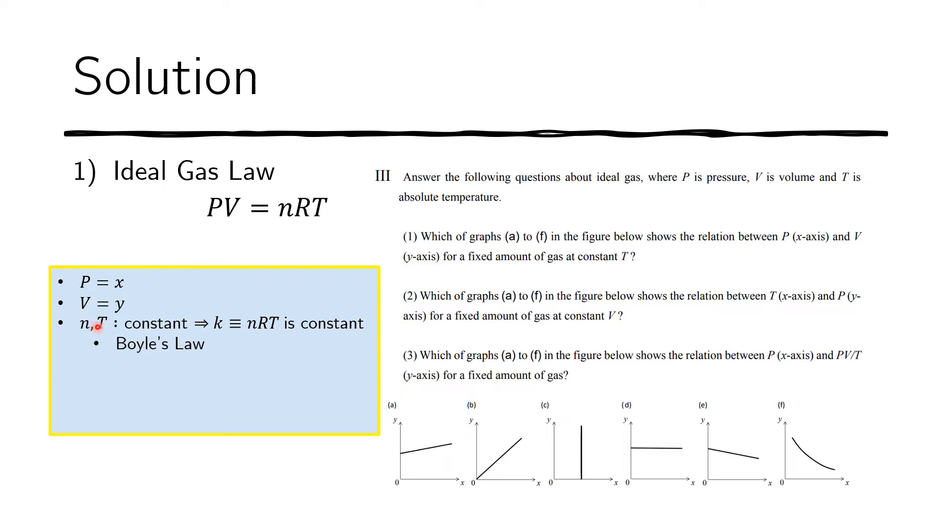So if you recall from chemistry, when the temperature and the amount of gas is constant, we are reduced to Boyle's law. So we have a relationship between P and V. So that's just an additional trivia. You don't need to know that to solve this problem. And so we replace P with x, V with y, and nRT with k.